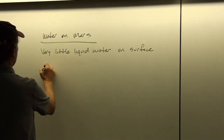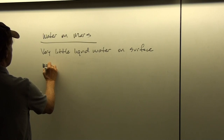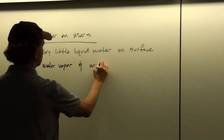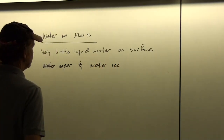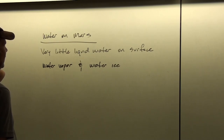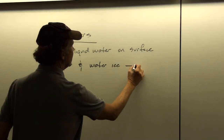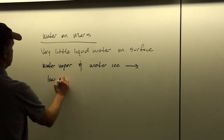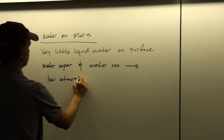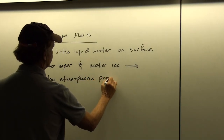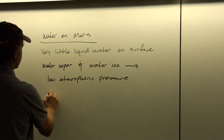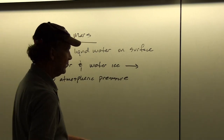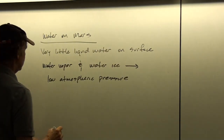But we do have water vapor, and we have water ice. So the water vapor, turning to ice, is indicative of a low atmospheric pressure. And we have what's called sublimation. At this low pressure, the water turns straight from ice to gas.